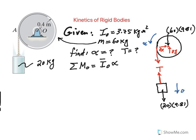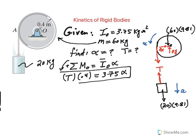And we know this guy is going to accelerate down with acceleration A. So I'll pick counterclockwise to be positive. The only force that has moment about O is the tension. So that would be T times 0.4. That's what's causing the rotation. And that's equal to 3.75 times alpha. So that's one equation.